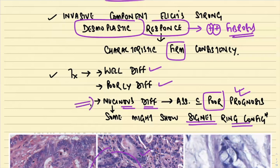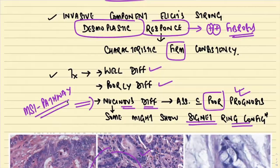There are two pathways: the APC pathway and the MSI pathway. The mucinous histology — can you recall? — is associated with the MSI pathway.